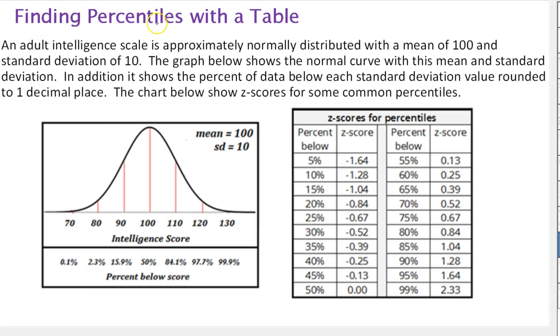In this video, we're going to find percentiles with the table. An adult intelligence scale is approximately normally distributed with a mean of 100 and a standard deviation of 10. The graph below shows a normal curve with this mean and standard deviation.